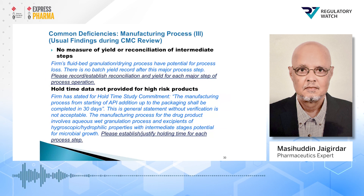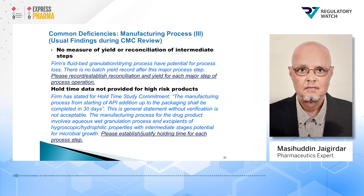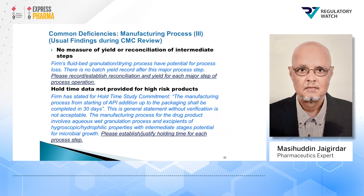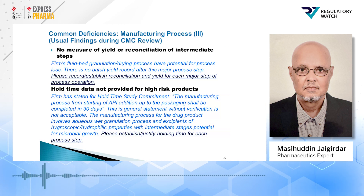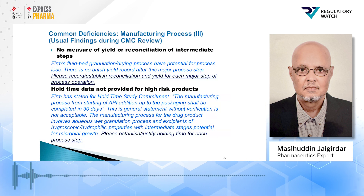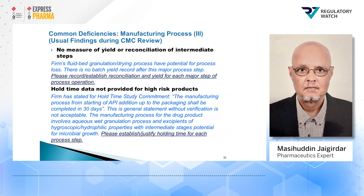Other examples include no measure of yield or reconciliation for intermediate steps. Fluid bed granulation drying processes have potential for process loss, and there was no batch yield record after this major process step. The fluid bed granulation processor has many areas — it has a valve, an expansion chamber, and a filter assembly — and there is potential for process loss due to material adhering in these areas. Therefore, the firm was asked to please record and establish reconciliation for each major step of the process operation.